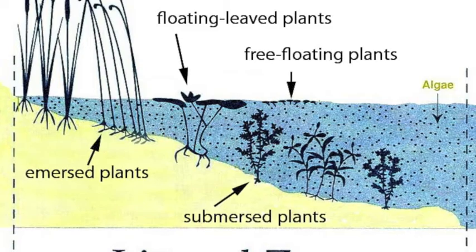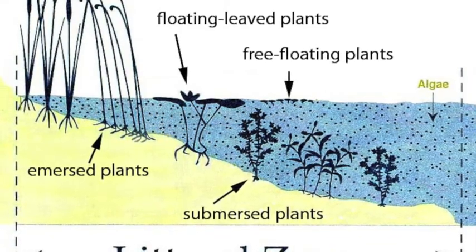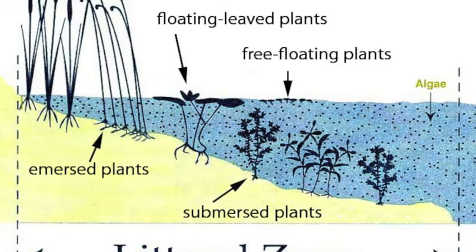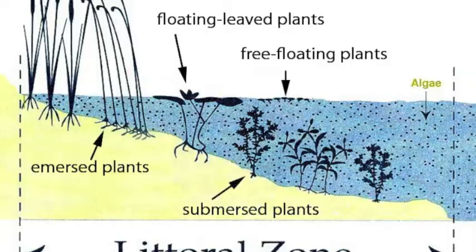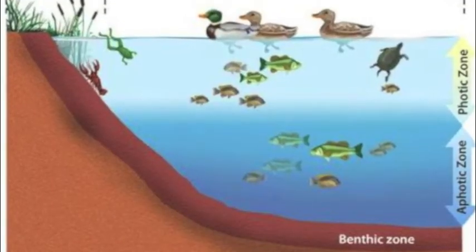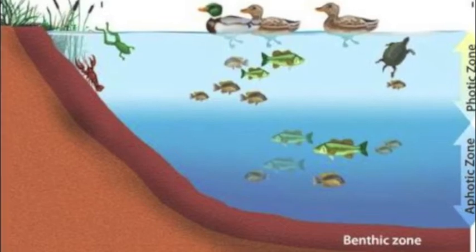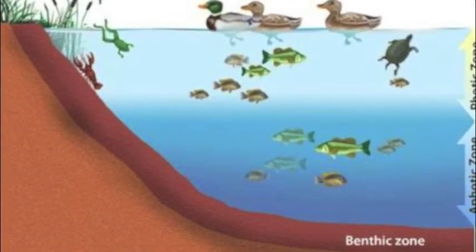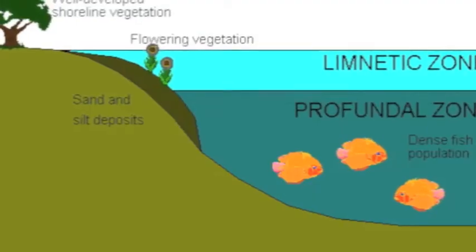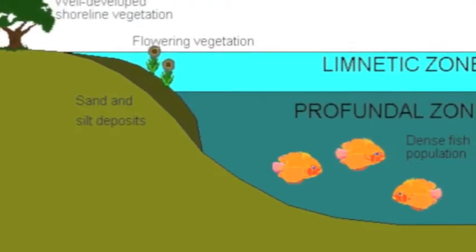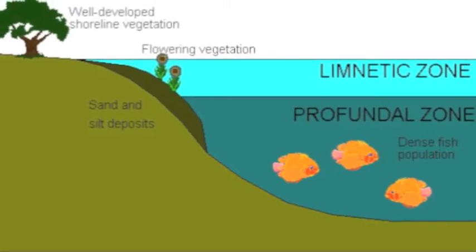Each lake is split into three different zones. The littoral zone, which is the section closest to the shore, is the shallowest and the lightest portion of the lake because sunlight is able to reach all the way to the bottom of the water. The limnetic zone spans the rest of the surface area of the lake, but is only the top section of the water. It is light, like the littoral zone, and warm because sunlight is able to reach it. Underneath the limnetic zone is the profundal zone, which is dark and cold because sunlight is not able to reach all the way to the bottom.